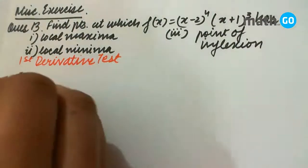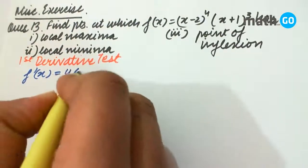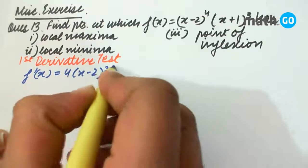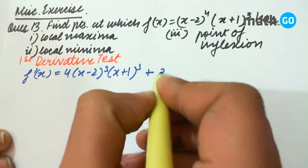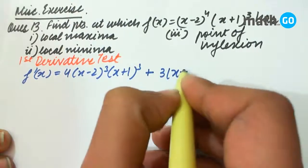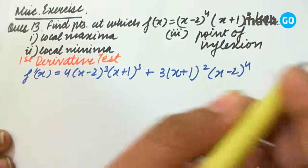First of all we will find f'(x) which is equal to 4(x-2)³(x+1)³ plus 3(x+1)²(x-2)⁴.